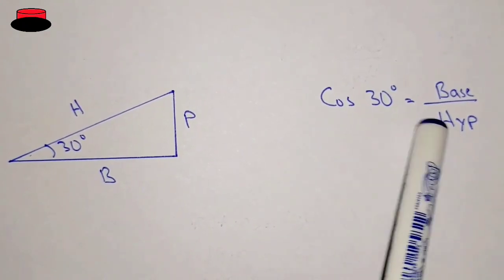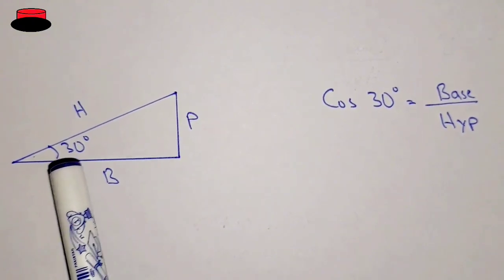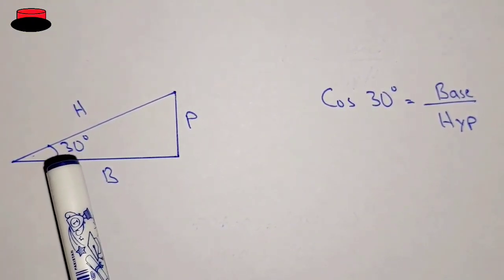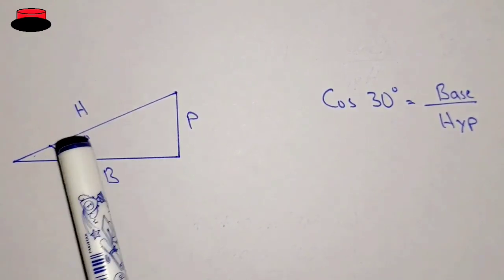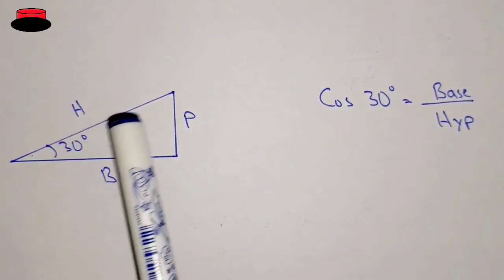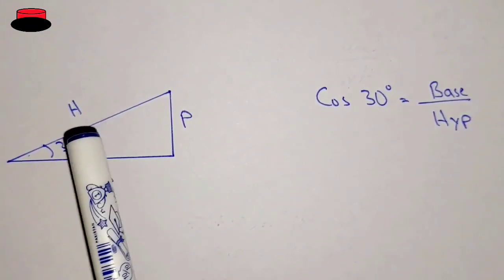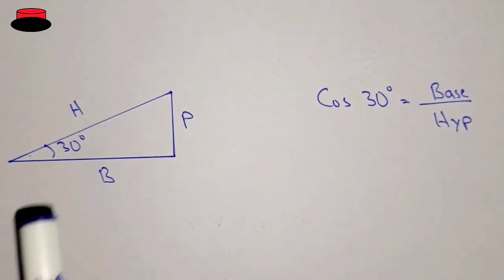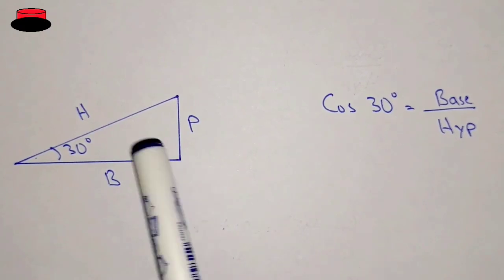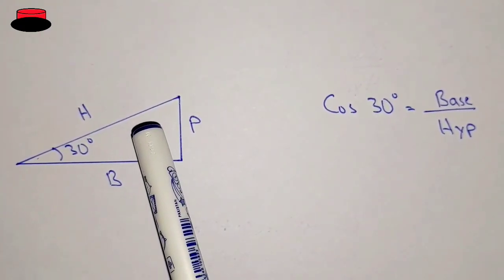Notice that in the previous figure the angle was 45 degrees, and here it is 30 degrees. The length of the hypotenuse is shorter than in the previous figure. So if we reduce the length of the perpendicular, the length of the hypotenuse will also decrease.